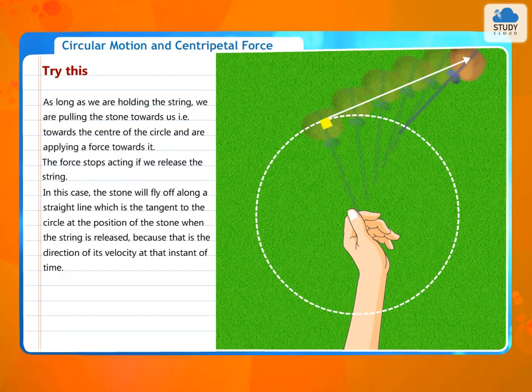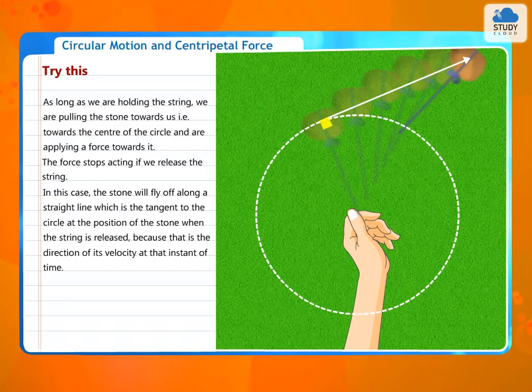Which is the tangent to the circle at the position of the stone when the string is released, because that is the direction of its velocity at that instant of time.